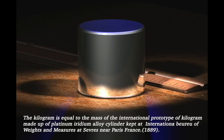Kilogram is equal to the mass of the international prototype of kilogram made up of platinum iridium alloy cylinder kept at International Bureau of Weights and Measurement at Severus near Paris, France. The definition was given in the year 1889.